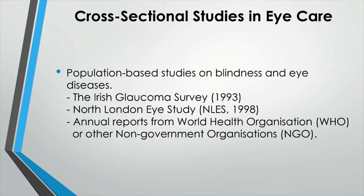There are a number of population-based cross-sectional studies on blindness and eye diseases. For example, the Irish Glaucoma Survey in 1993 was a successful cross-sectional study that provided prevalence of glaucoma in people over 50 years old. Another cross-sectional study, the North London Eye Study in 1998, measured prevalence of serious eye diseases such as cataracts or age-related macular degeneration in people over 65 years old. Every year, non-profit organizations such as WHO or other NGOs publish annual reports on global and regional estimates of the prevalence of visual impairments and other major blinding eye conditions. Results from such surveys are used to improve eye care services or health policy.